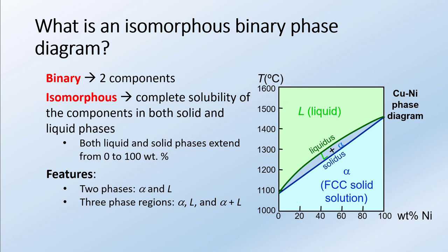A couple of features to note about this particular phase diagram. Number one is that there are two phases. We have a solid phase — in this copper-nickel phase diagram it's an FCC solid solution that we'll call alpha — and we have a liquid phase that we'll just call L. There are three phase regions: one is just pure alpha, another is pure liquid, and there's also a third region that is some combination of liquid plus alpha.